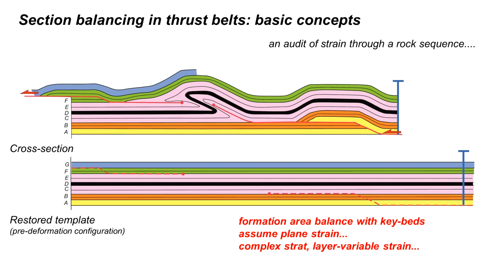Formation area balancing with keybeds allows a more general approach to be adopted where deformation varies through multi-layers. We still have to assume plain strain and in our simple example the stratigraphy was layer cake before deformation. But formation area balancing can be applied to more complicated stratigraphic variations and more heterogeneous strain through multi-layers.